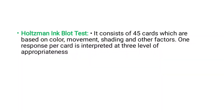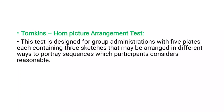Next is the Holzman Inkblot Test. This consists of 45 cards based on color, movement, shading, and other factors. One response per card is interpreted at three levels of appropriateness. Each card has some color, movement, or shading element, and the subject has to select one response from each card.